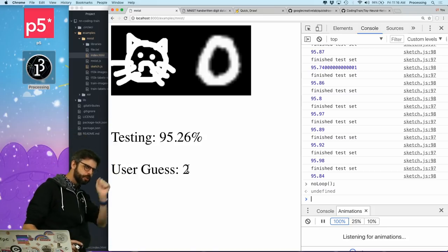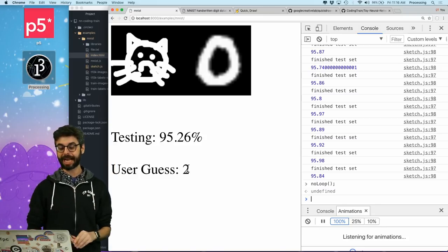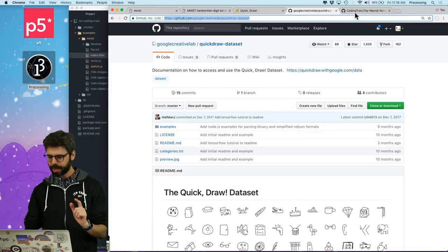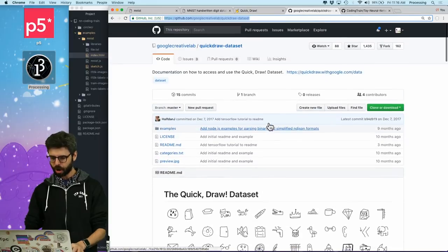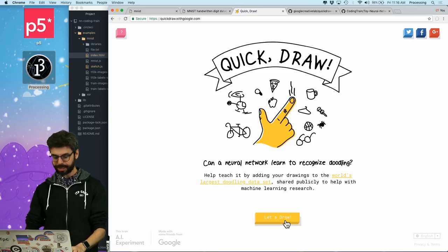I want to know, is that a cat you drew, or a puppy, or a rainbow, or something else. And how am I going to do this? I am going to do this with the Google Quick Draw dataset. Quick Draw is a project from Google Creative Labs.